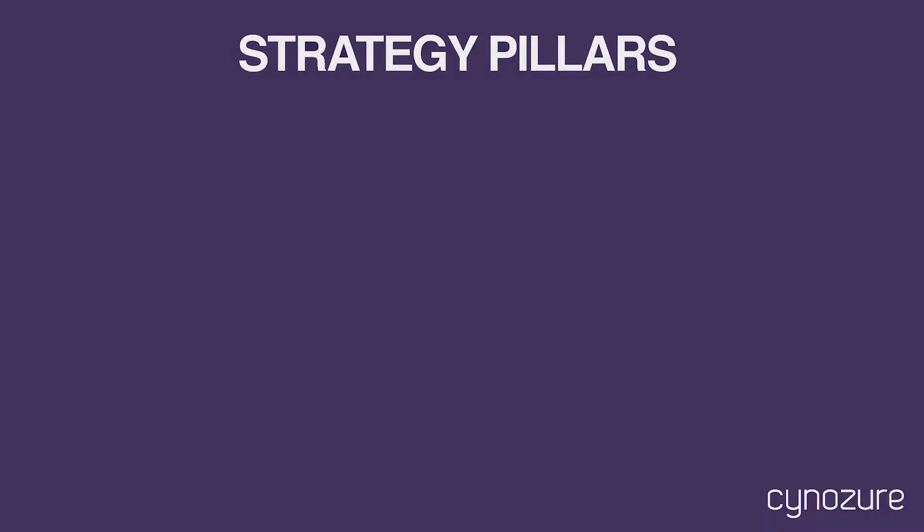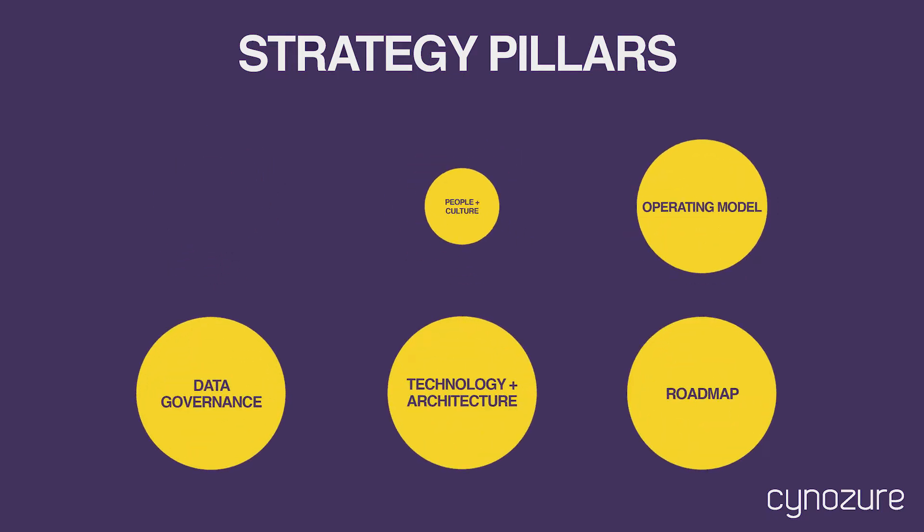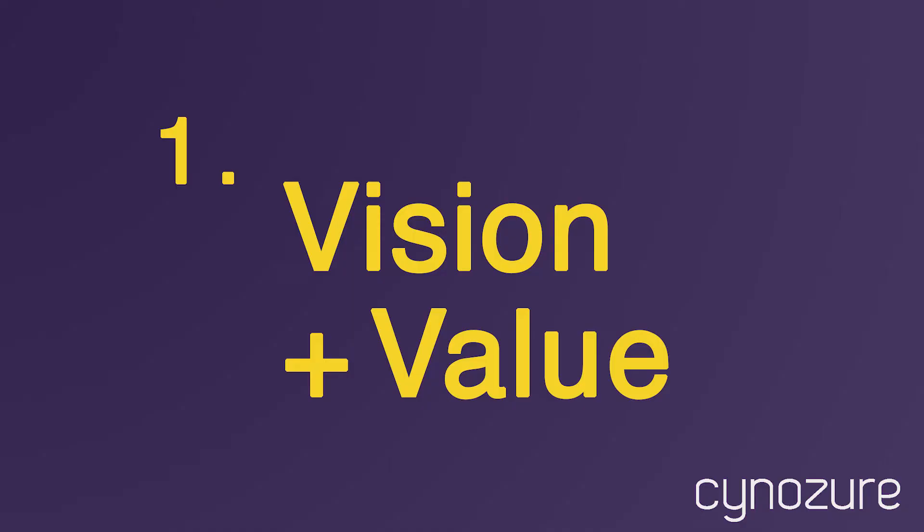That covers a whole bunch of things across an organisation, and we want to talk to you about six key pillars that make up the foundational building blocks of a solid data strategy. First up is vision and value. The vision and value pillar is all about aligning your data initiatives, programs, and efforts around a business outcome that aligns itself to the business strategy.